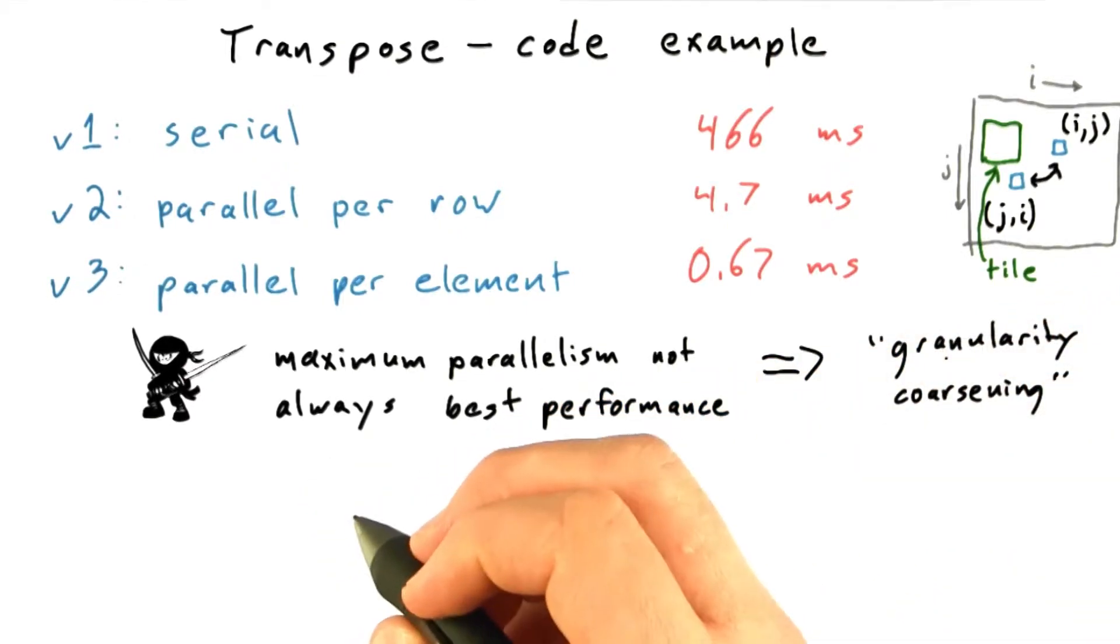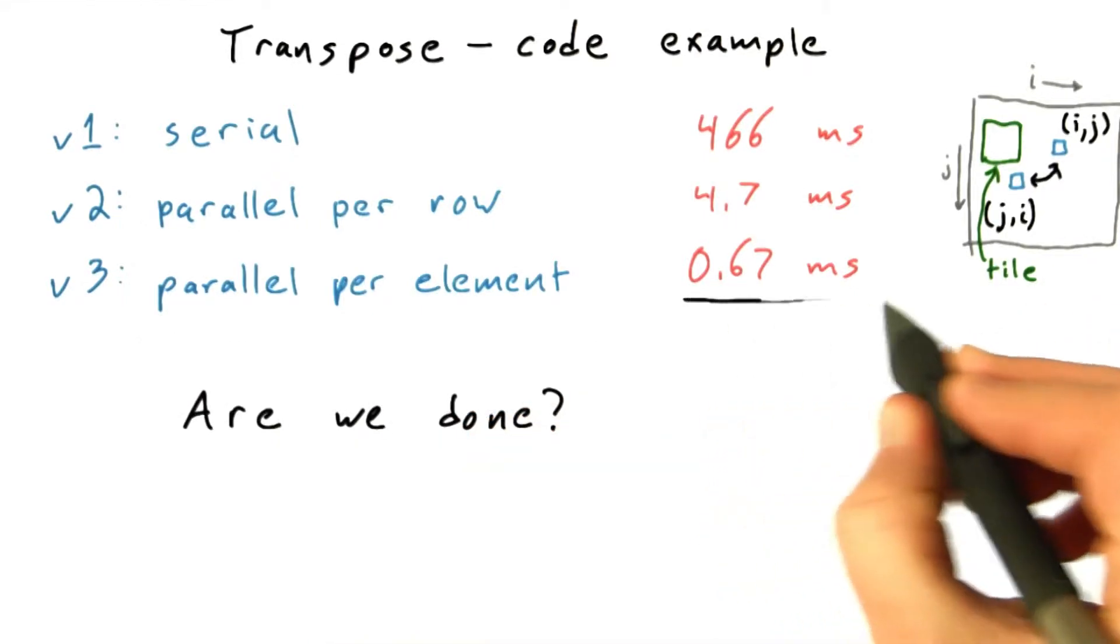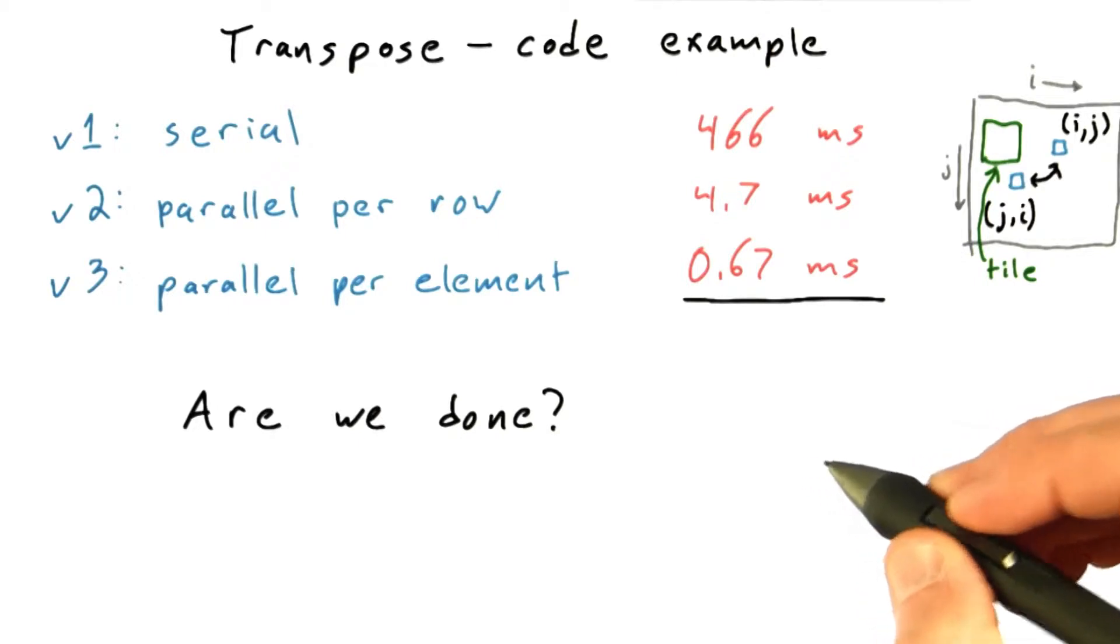That said, the first problem is almost always to find enough parallelism. So keeping that in mind, are we done? Is this 0.7 milliseconds the fastest that we can transpose this matrix on this GPU?